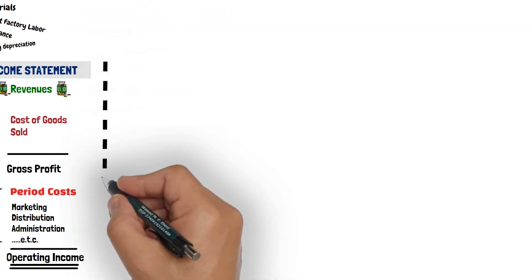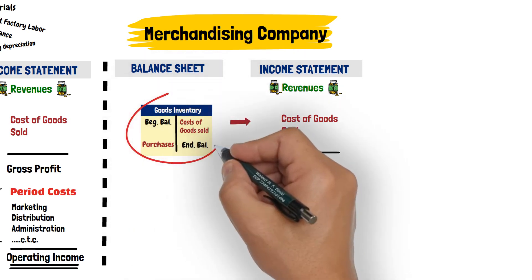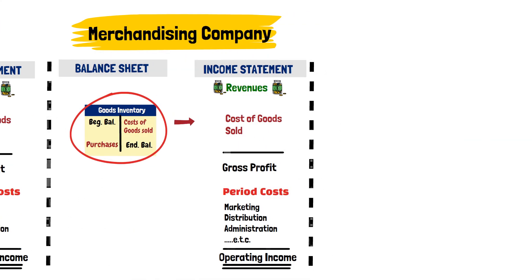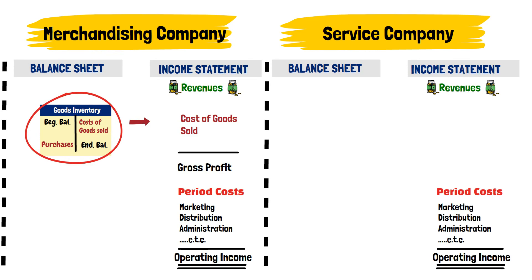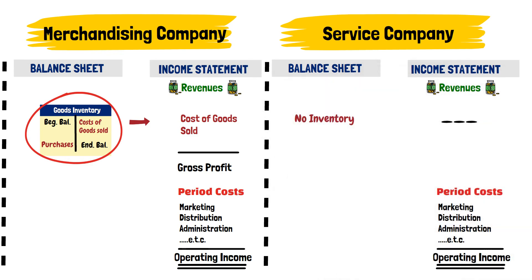A merchandising company only purchases goods then sells them to customers, so it has only one category of inventory. A service company provides a service and therefore does not have any inventory.